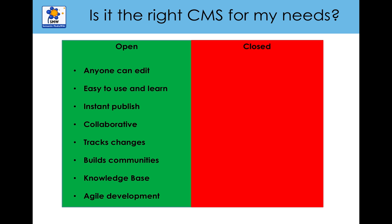Let's talk about using a wiki as a content management system. To understand if a wiki is the right CMS for you, you need to consider how a wiki works. Really, if I could sum it up, it's open — and as you can see from the bullet points, it encourages collaborative open working. Anyone can edit, but you can limit that to people who have an account. Most organizations won't have anonymous editing. When information is edited it's instantly published.